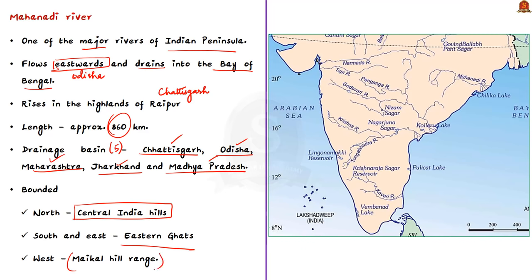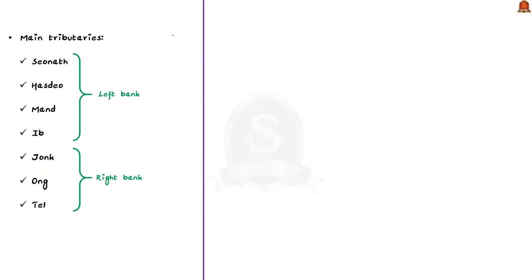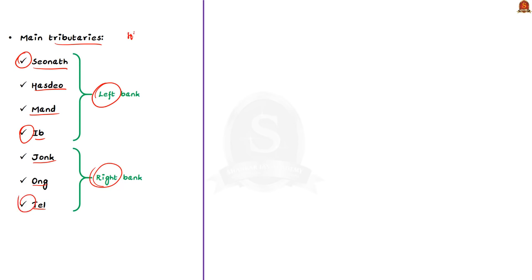The main left bank tributaries of Mahanadi are Seonath, Hasdeo, Mand, and Ib, while the right bank tributaries are the Ong, Tel, and Jong. Among these, the Seonath, Ib, and Tel together constitute nearly 46.63 percent of the total catchment area of the river. Also note that Seonath is the longest tributary of the Mahanadi.